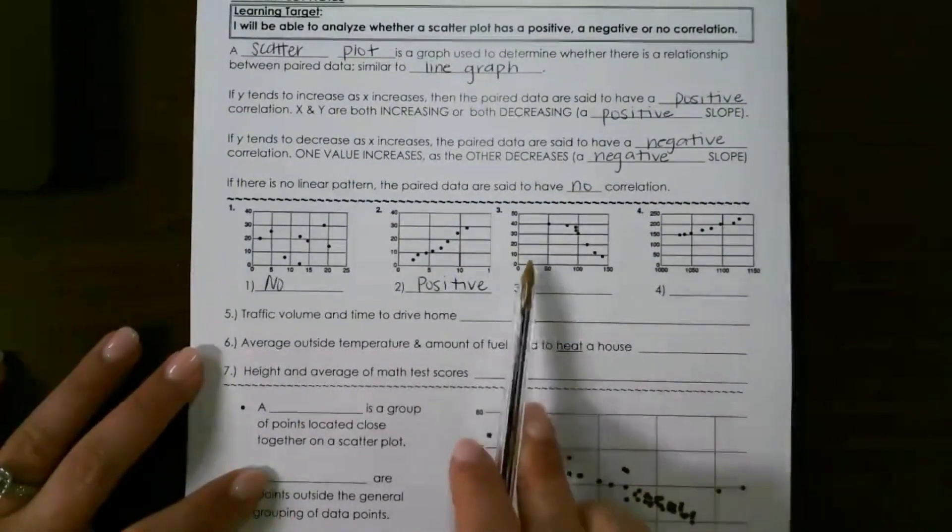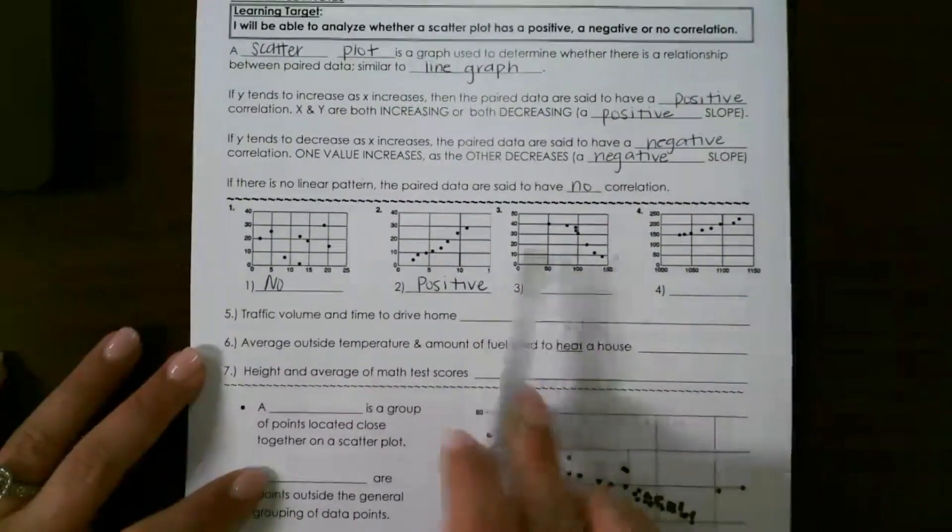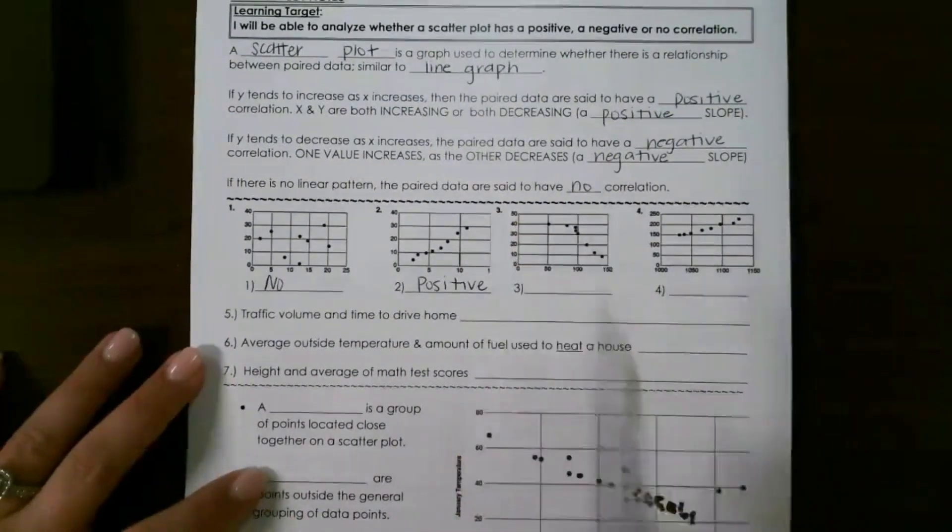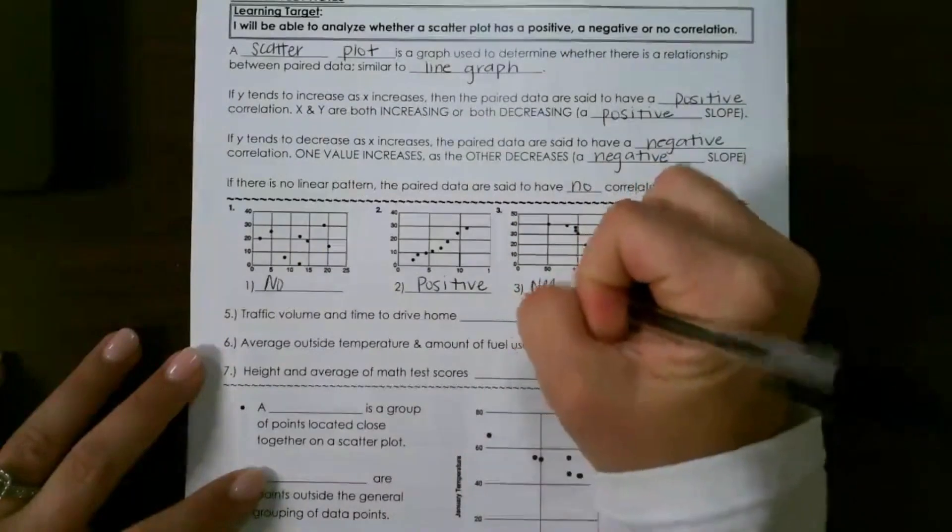On this one, we have X increasing, but Y is decreasing, which causes it to have negative correlation.